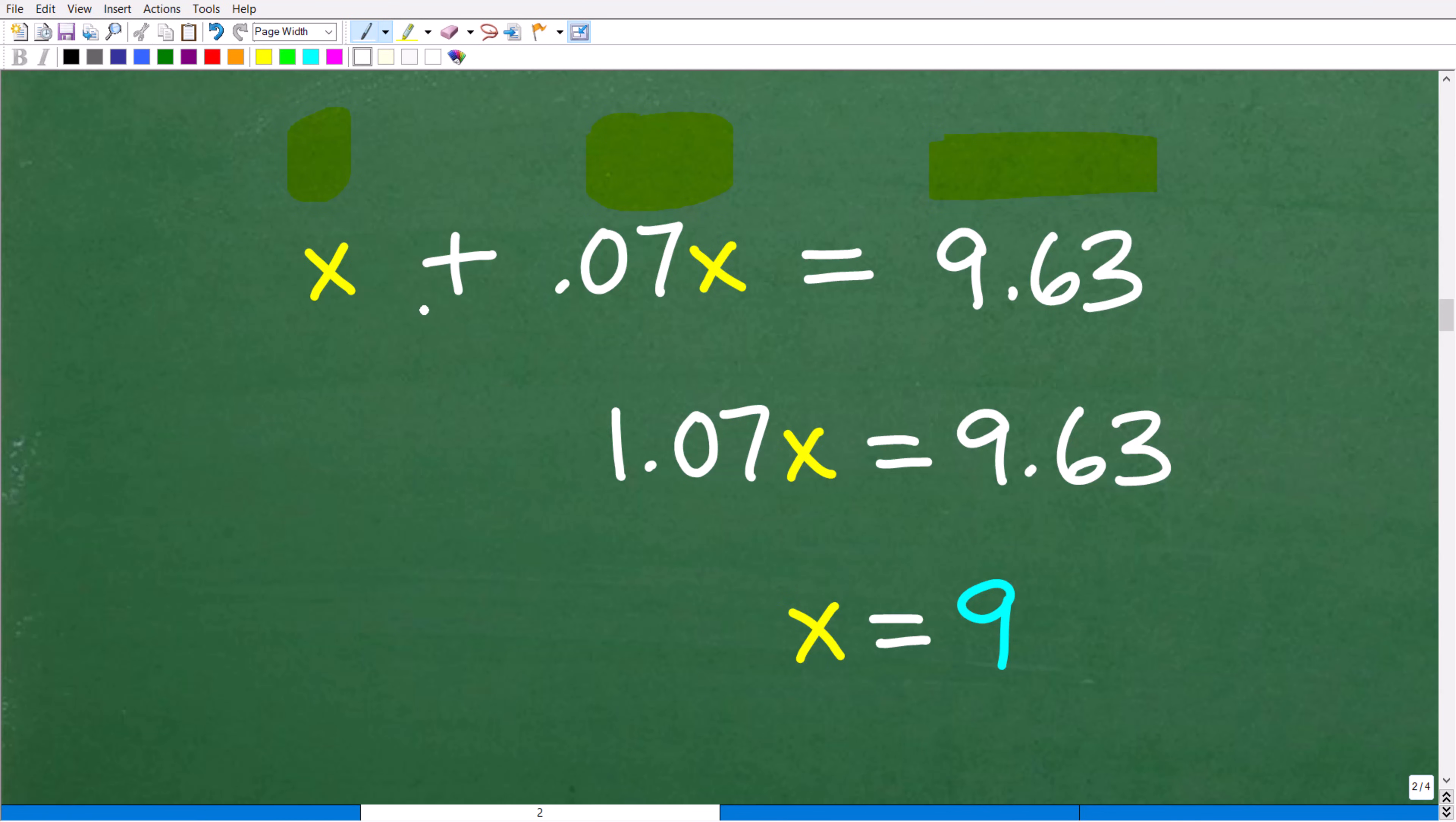But the total amount with everything, the product plus the tax is 9.63. So let's go ahead and solve this equation. So X plus 0.07X, there is a 1 in front of that X. These are like terms. So it's going to be 1 plus 0.07. So that's 1.07X is equal to 9.63. And to solve for X, all we have to do is divide both sides of the equation by 1.07.